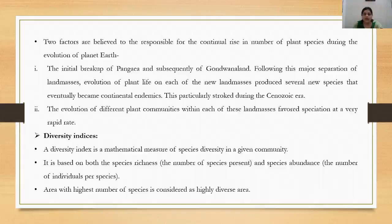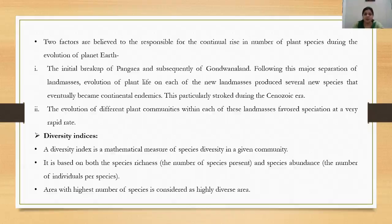Two factors are believed responsible for the continual rise in the number of plant species during Earth's evolution. The first factor was the initial breakup of Pangea and subsequently of Gondwana land. Due to this major separation of land masses, evolution of plant life took place on Earth and several new species were produced, becoming continental endemics. This particularly took place in the Cenozoic era.